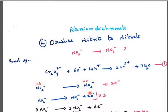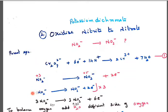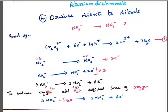In NO₃⁻, 3 into minus 2 is minus 6, and minus 6 plus 1 gives plus 5. So plus 3 and plus 5 — find the difference: 2. We should put 2 electrons on the higher oxidation state side. The first equation has 6 electrons, but this half-reaction has 2 electrons, so this equation should be multiplied by 3. So NO₂⁻ → NO₃⁻ + 2e⁻, multiplied by 3, gives 3NO₂⁻ → 3NO₃⁻ + 6e⁻.